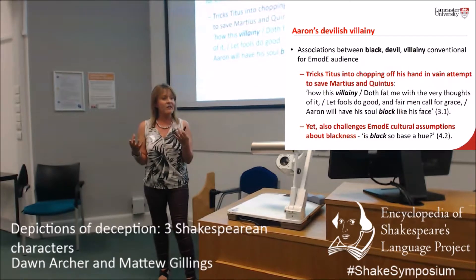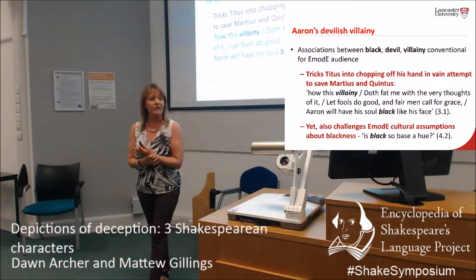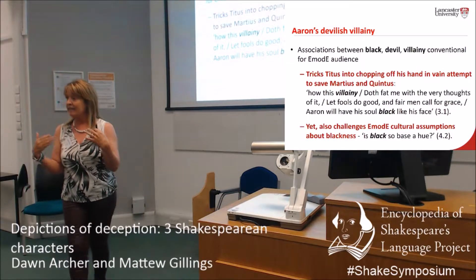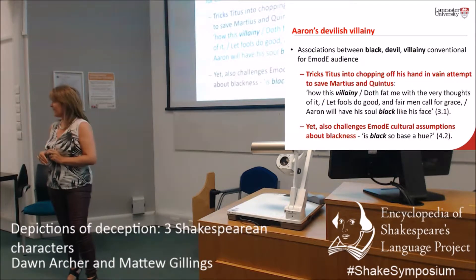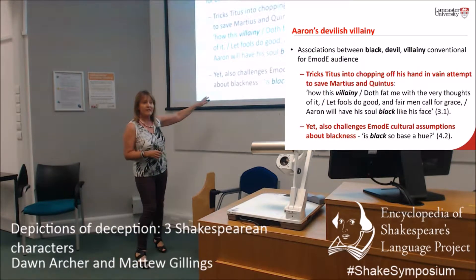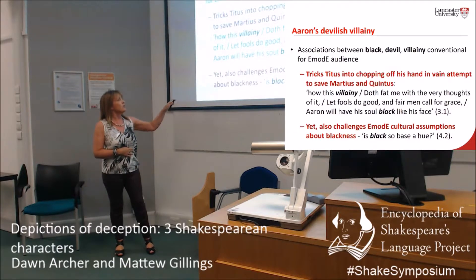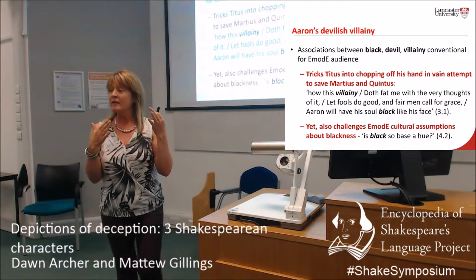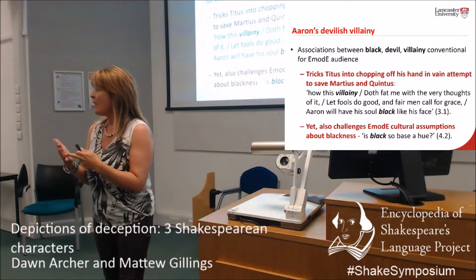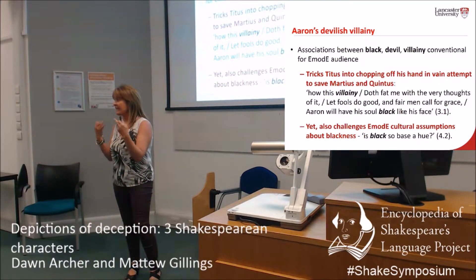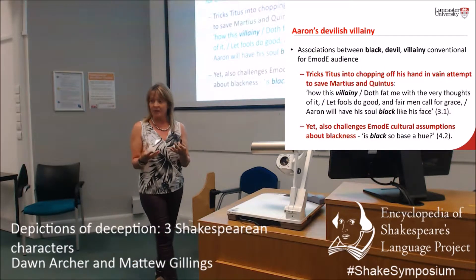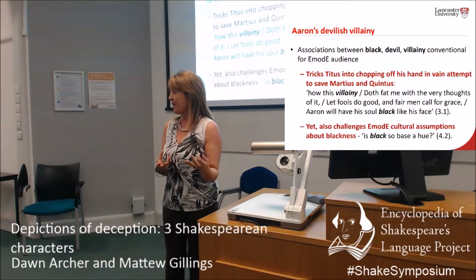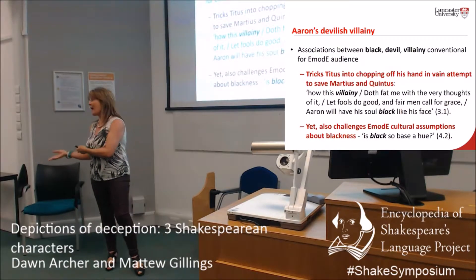You get this comment: 'how this villainy does fat me with the very thoughts of it, let fools do good and fair men call for grace. Aaron will have his soul black like his face.' This idea that if you're black-skinned you've also got a soul that's black — which isn't exactly politically correct. But that's not who he actually is, because he also challenges those same cultural assumptions about blackness, especially when he talks about his son to Tamora's two eldest children. Tamora sends her other children to kill the baby she's had illicitly with Aaron, and he's the one that feels for the child, challenging the idea that it's okay to kill a baby, even an illegitimate one.